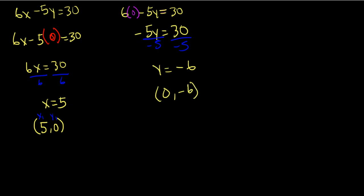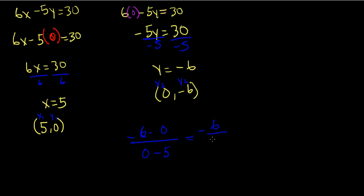So we can now use the slope formula in order to find the slope of the line. So y2 minus y1 first: negative 6 minus 0 over x2 minus x1, which would be 0 minus 5. When we simplify, we get negative 6 over negative 5. Because it's two negatives, it becomes positive. So the slope of the line would be 6 over 5.